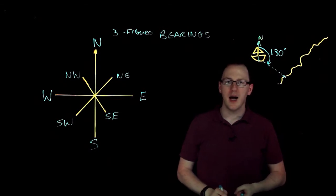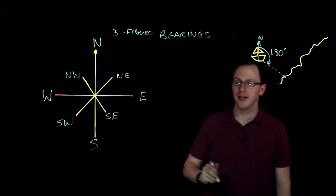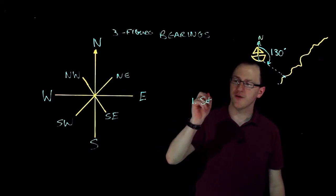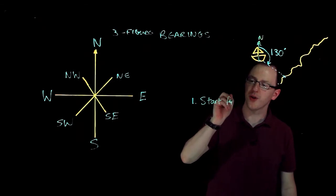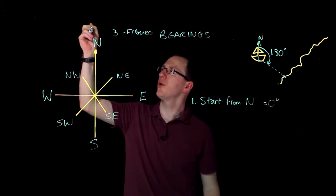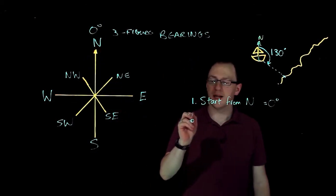So when I'm measuring bearings, I'm measuring an angle, but there are three things I want to make sure. I want to make sure, first of all, that I start from north. North is zero degrees. So on my compass, north is zero degrees. The second thing I want to make sure is that I measure in a clockwise direction.